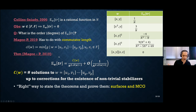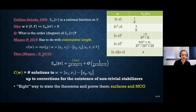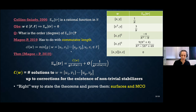The right way to think about and prove this result is geometric or topological, in terms of surfaces and mapping class groups. Using that framework, one can generalize to other statistics of W-random unitary matrices.